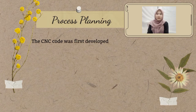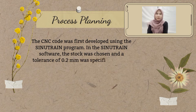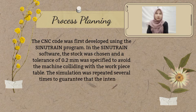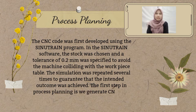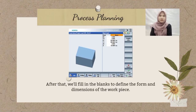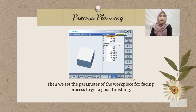The CNC code was first developed using the SinoTrain program. In the SinoTrain software, the stock was chosen and a tolerance of 0.2mm was specified to avoid the machine colliding with the workpiece table. The simulation was repeated several times to guarantee that the intended outcome was achieved. The first step in process planning is to generate CNC code using SinoTrain software. After that, we fill in the blanks to define the form and dimension of the workpiece. Then, we set the parameters of the workpiece for the facing process to get a good finish.